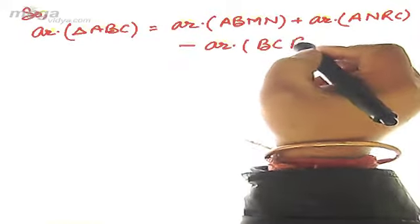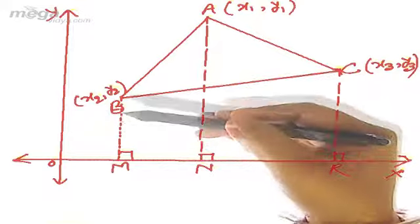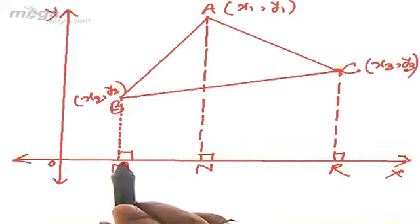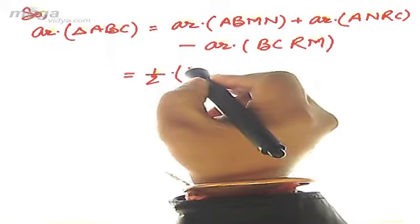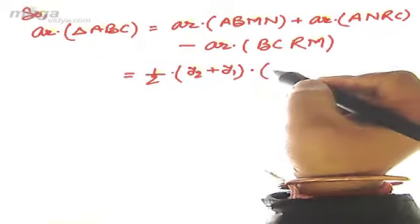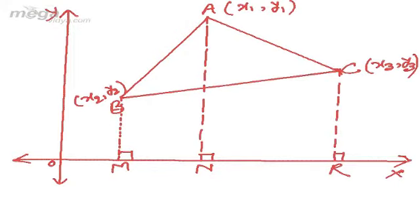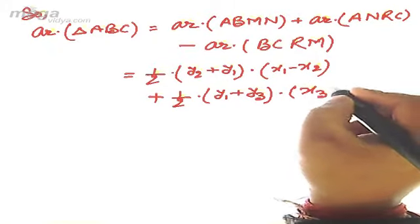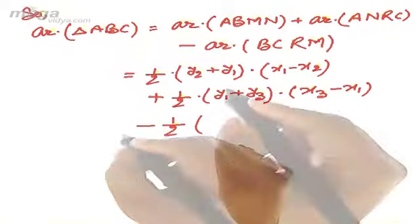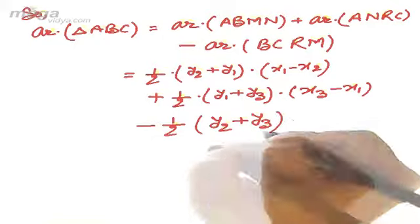Area of trapezium ABMN: the two parallel sides are y2 and y1, and the distance between them is MN = x1 − x2. So it is ½ × (y2 + y1) × (x1 − x2). Area of trapezium ANRC: parallel sides are y1 and y3, distance is x3 − x1, so ½ × (y1 + y3) × (x3 − x1). Area of trapezium BCRM: parallel sides are y2 and y3, distance is x3 − x2, so ½ × (y2 + y3) × (x3 − x2).